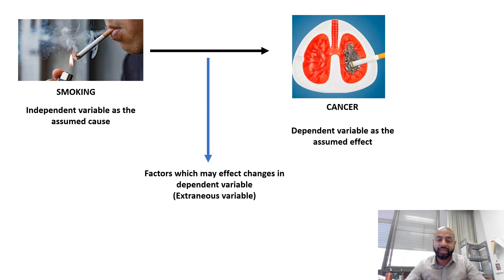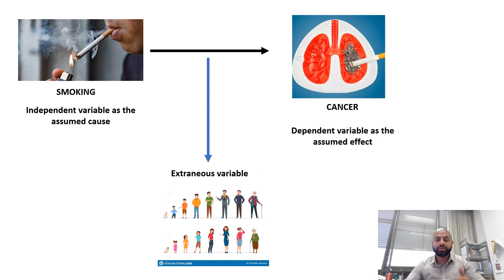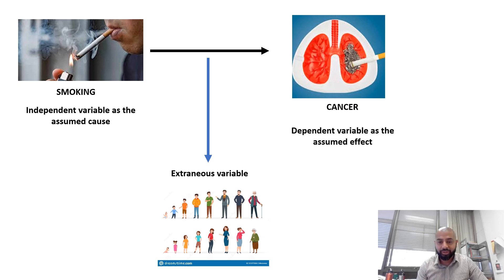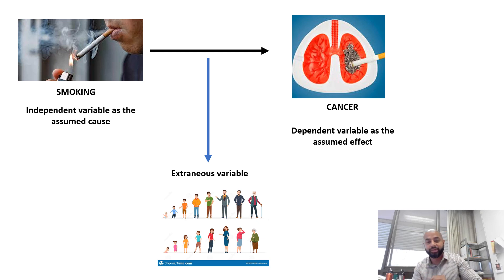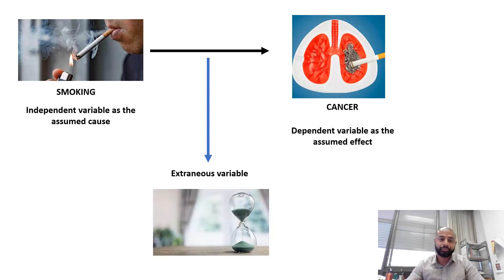Let's take examples of extraneous variables. The first is age. Age has something to do with cancer, because smoking cannot be the cause of cancer in infants — most young children are not smoking. So if they have cancer, that doesn't mean smoking caused it. In your study population, if you have children or young adults with cancer who have not been smoking, you cannot say that smoking is the only cause of cancer.